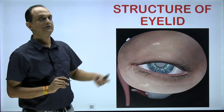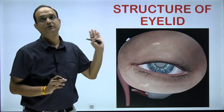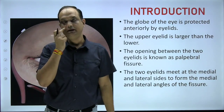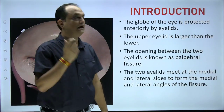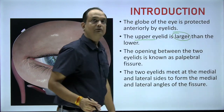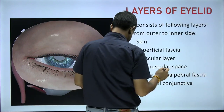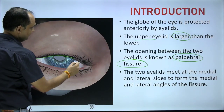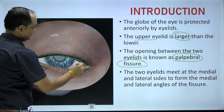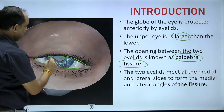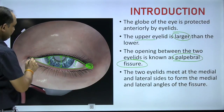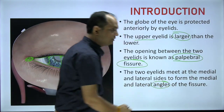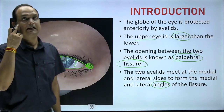Hello students, today we'll discuss the structure of the eyelid. A common exam question is to write down the layers of the eyelid. The globe of the eye is protected anteriorly by the eyelids. The upper eyelid is larger than the lower eyelid. The gap between the lower margin of the upper eyelid and the upper margin of the lower eyelid is known as the palpebral fissure. On both ends of the palpebral fissure you will find the angles of the eye, known as the medial and lateral angles, or canthi.